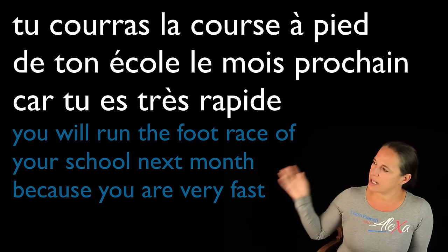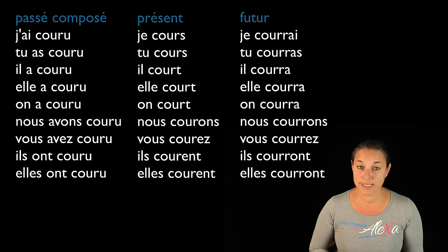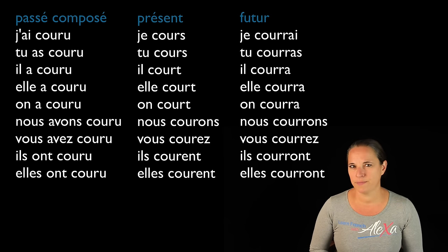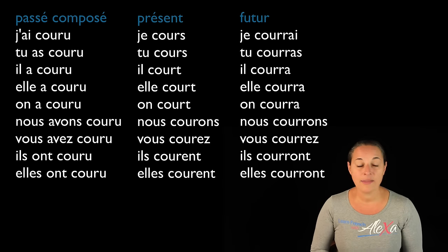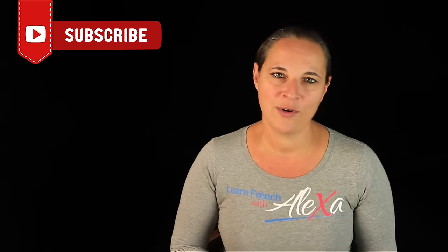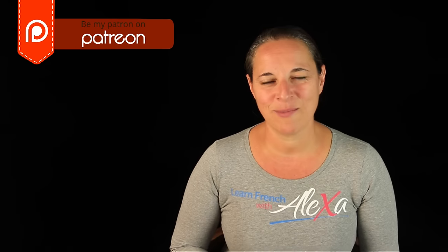Now let's have a look at what all three tenses look like side by side. Do you see any patterns? Do you see anything that can help you with this highly irregular verb? It's up to you to learn it the way you can — we all learn differently. That is courir in three tenses. Remember to subscribe to my YouTube channel, and have a look at LearnFrenchWithAlexa.com and my Patreon page. Au revoir, à bientôt, bisous bisous, bye!